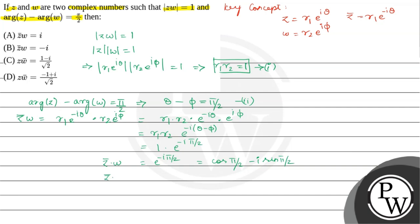So we get Z bar into W is equals to minus i. So option B is correct.